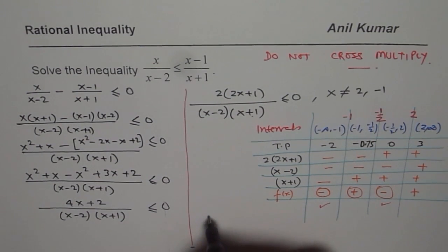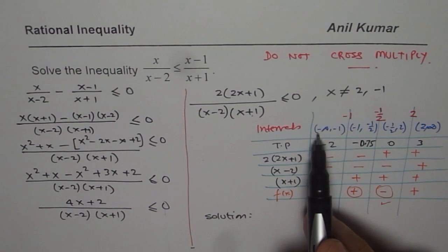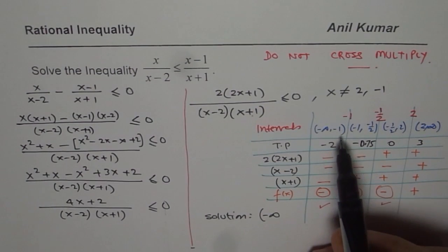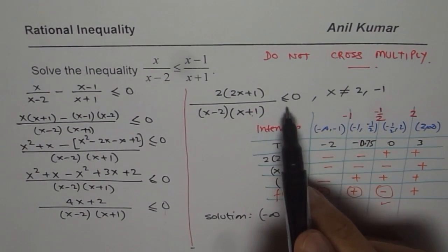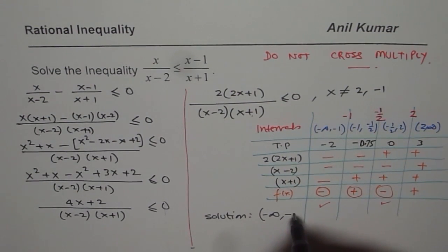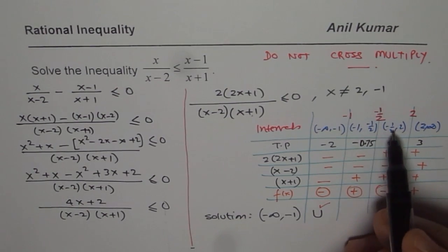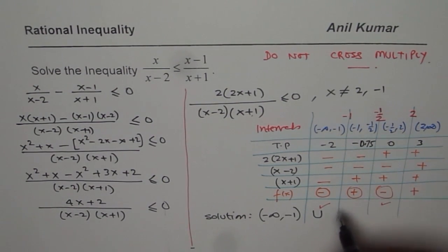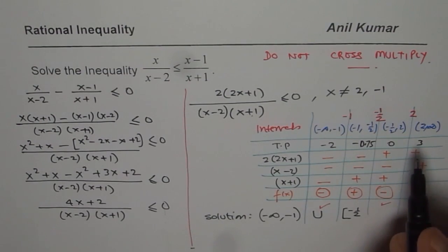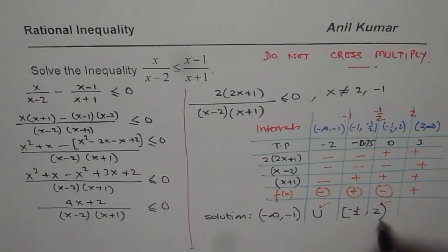Now, you cannot include negative infinity, so that is always not included. However, can you include minus 1? Because less than or equal to minus 1 is also this country. It cannot be included, so it is from minus infinity to minus 1, both not included. Union. There we have minus half. Minus half is the zero, so you could include that. So we will have minus half included, since it is less than or equal to 0. And 2 cannot be included, since it is in the denominator. So that is kind of a very important part. So you should be very careful at this stage while writing your solution.